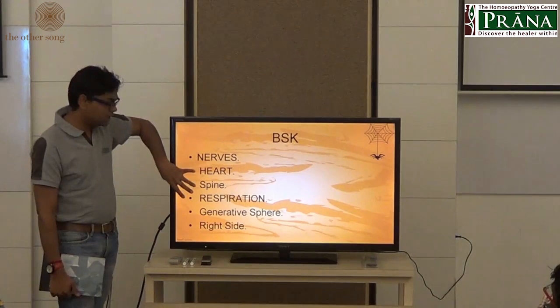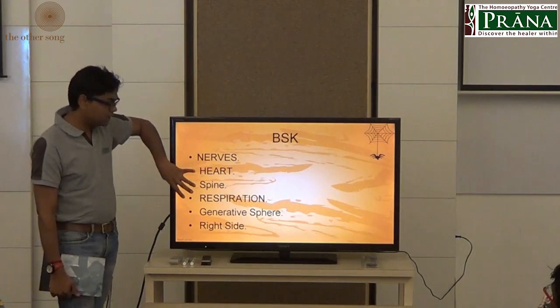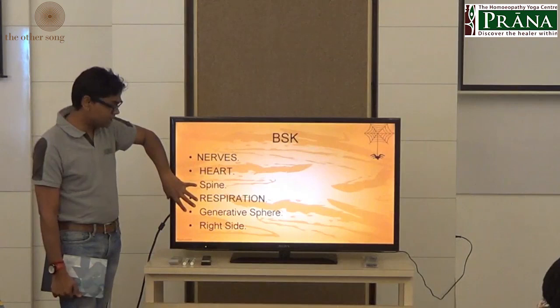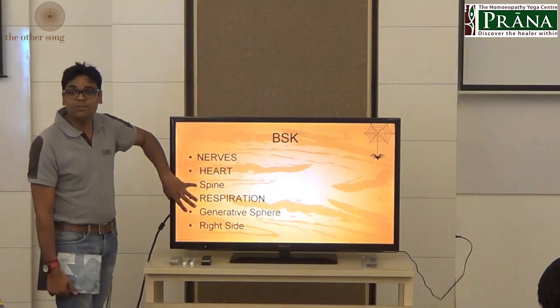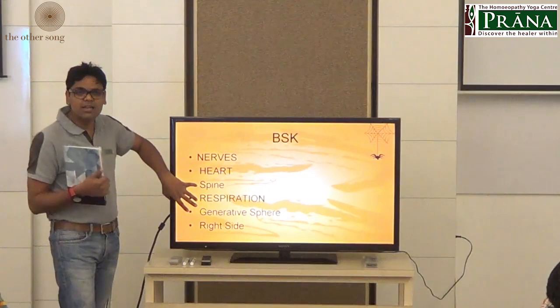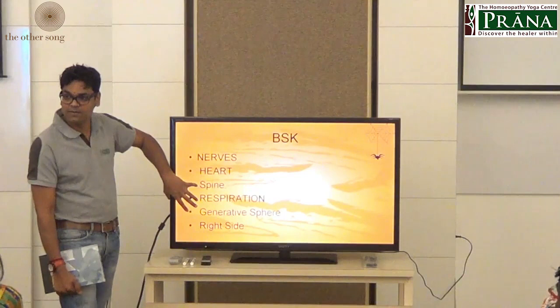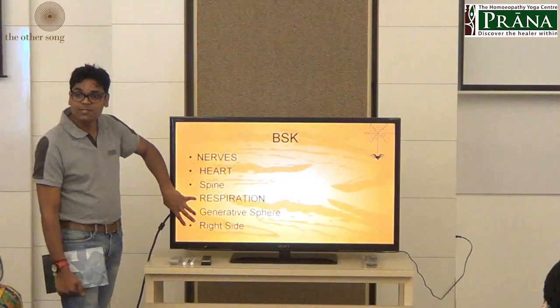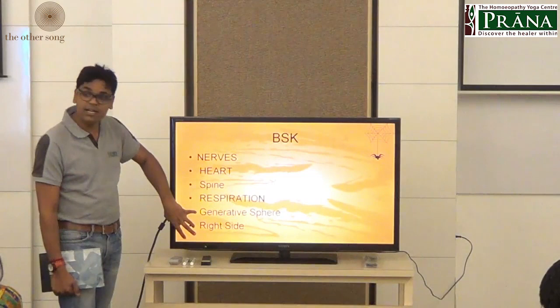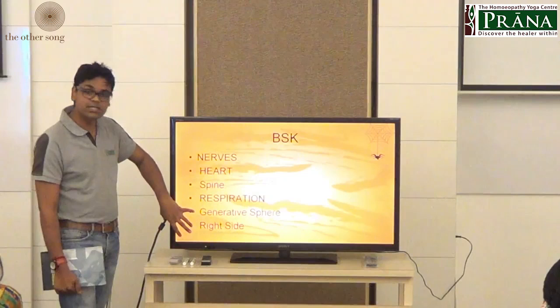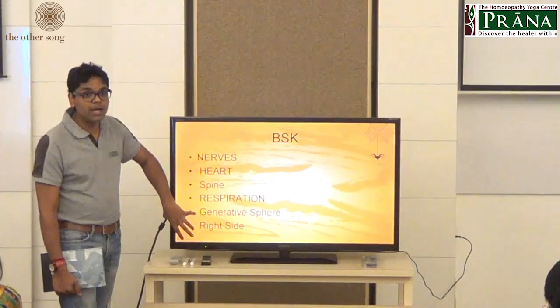From these symptoms we can understand the systems affected: nerves, heart, and spine — because it is basically a nervous remedy, all nerves are hypersensitive, so everything related to brain and spine gets affected. The whole spinal cord is sensitive. Respiration is also affected. And the generative sphere — the sexual sphere — was also affected, with symptoms like priapism.